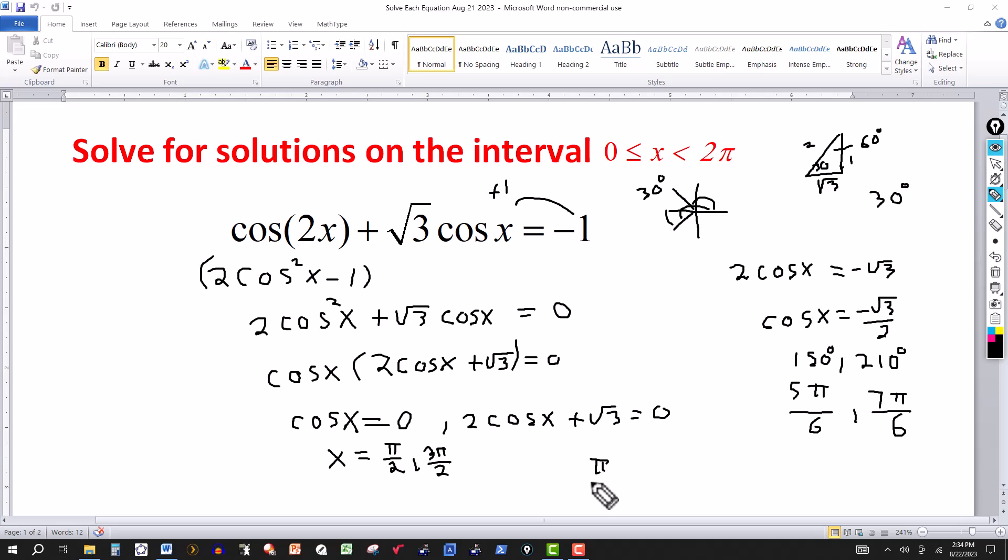And then I'm just really putting these together. Four solutions in the interval from 0 to 2 pi: pi over 2, 5 pi over 6, 7 pi over 6, and 3 pi over 2. And that pretty much completes the video for the solution of this equation.